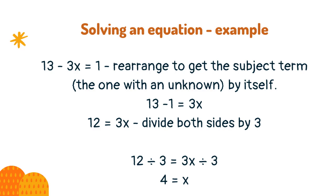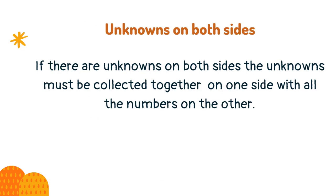12 divided by 3 equals 3x divided by 3. Therefore, 4 equals x. If there are unknowns on both sides, the unknowns must be collected together on one side with all the numbers on the other.